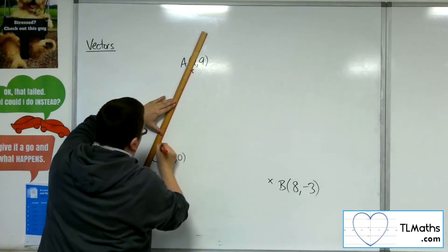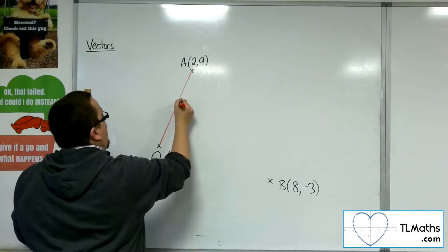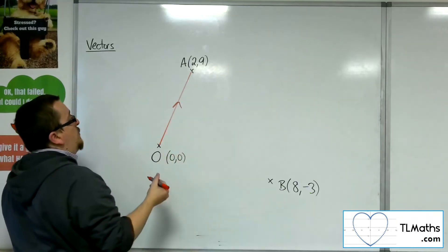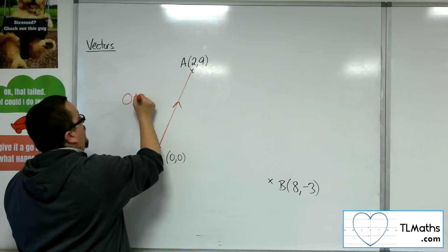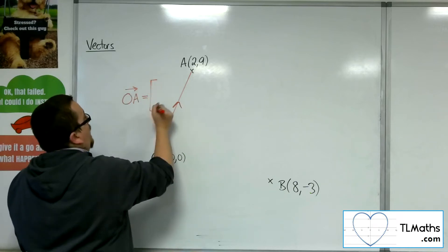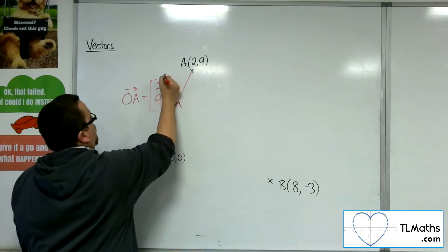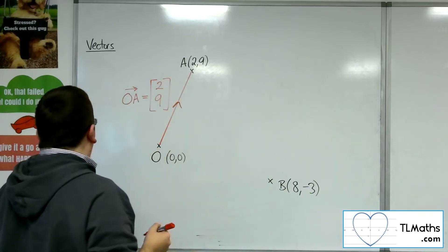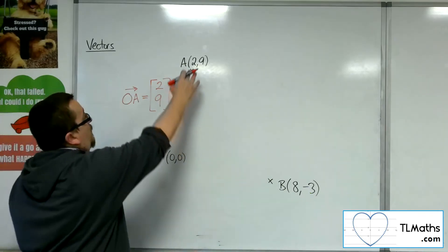all it's asking for is how do I get from the origin to A. And so I would refer to that as OA. That's the position vector for A, and it's just 2,9 - 2 along, 9 up. Okay, and it can be read off from the coordinate.